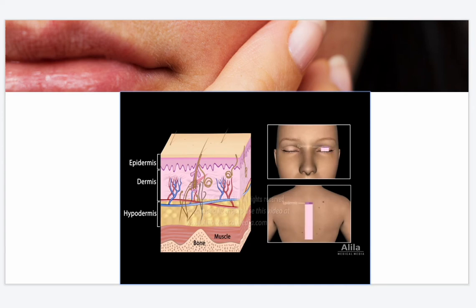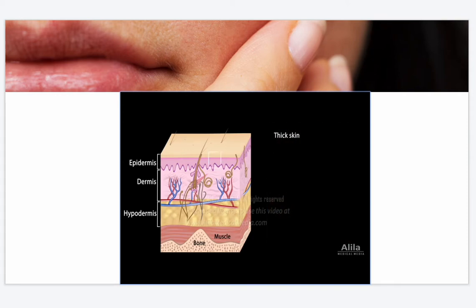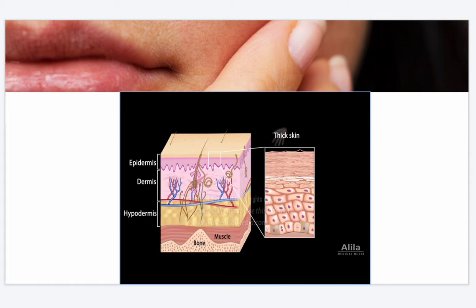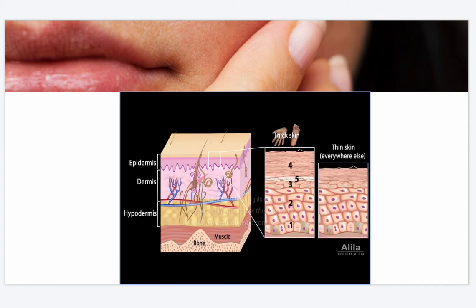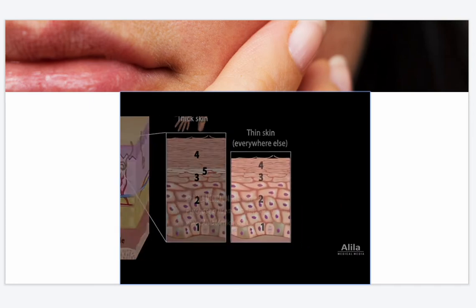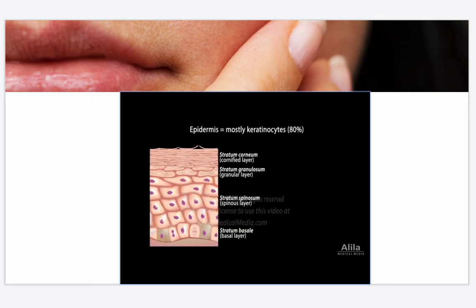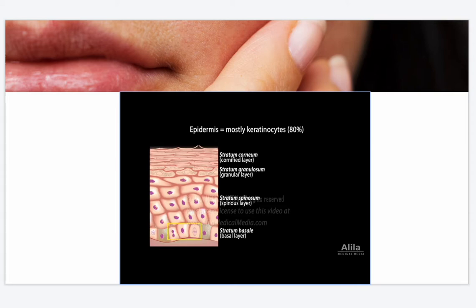The thickness of the epidermis and dermis vary depending on their location on the body, but skin is classified as thick or thin based on the thickness of the epidermis alone. Thick skin is found only in areas of high abrasion — palms, soles, and digits — and has five epidermal layers. Thin skin is everywhere else and has four epidermal layers. Most cells of the epidermis are keratin-producing cells, or keratinocytes. New cells are constantly produced by mitotic cell division in the basal layer, then move toward the skin's surface as they age and differentiate, changing shape from cuboidal to flat.